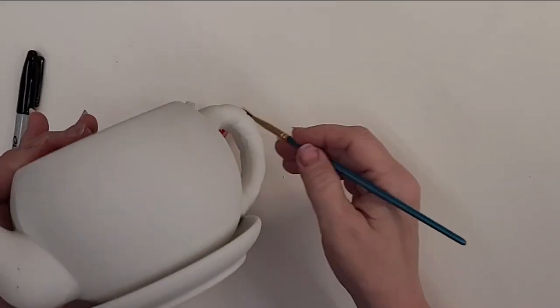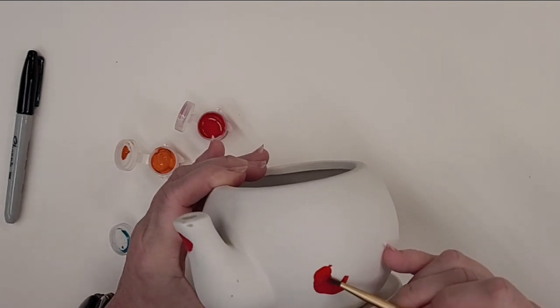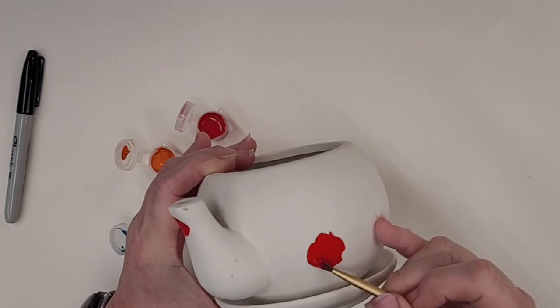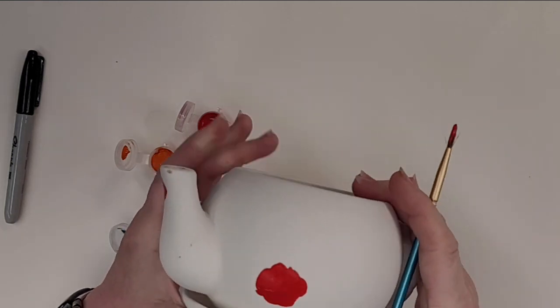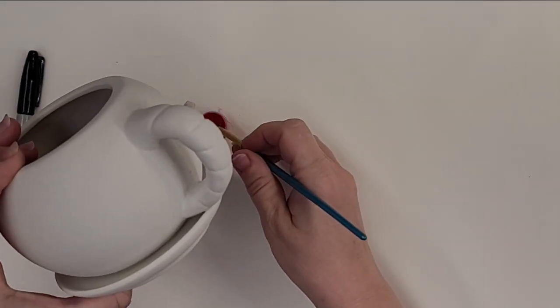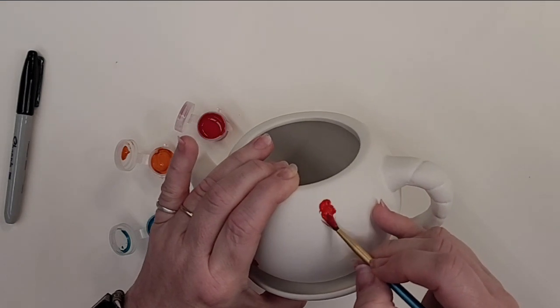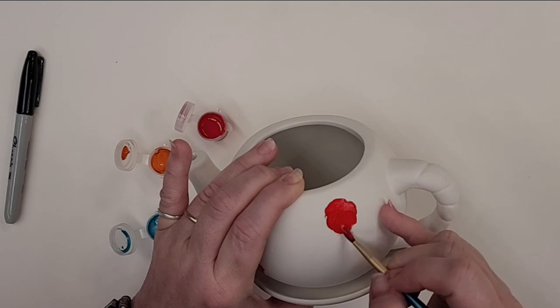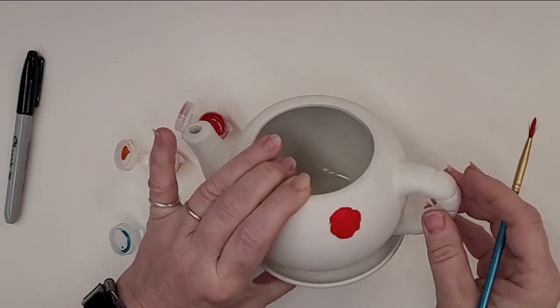And I'm just going to do a few of those all over my teapot. You might want to do different sizes, some bigger, some smaller, to add a little bit of interest. And you're welcome to do one style of flower all over your flower pot, if that's what you prefer.